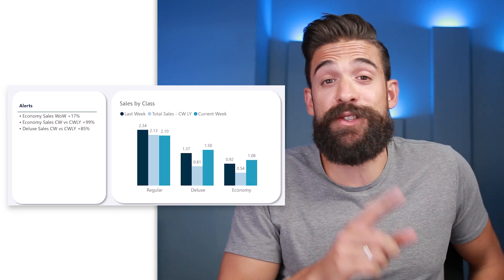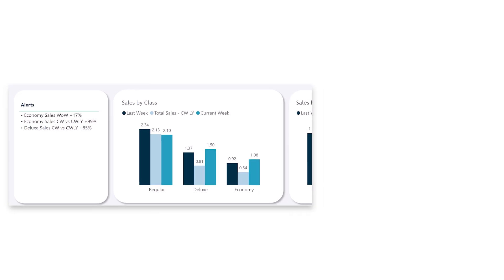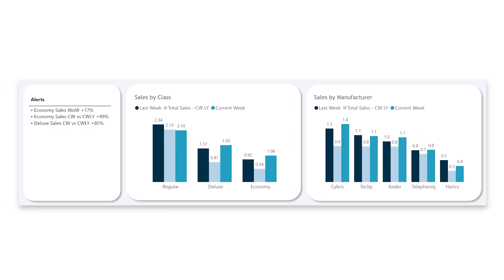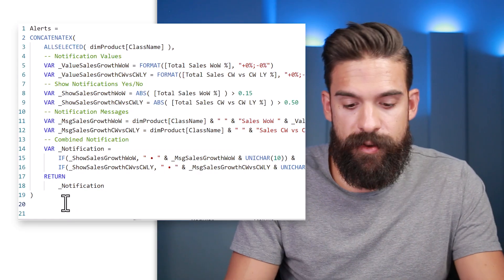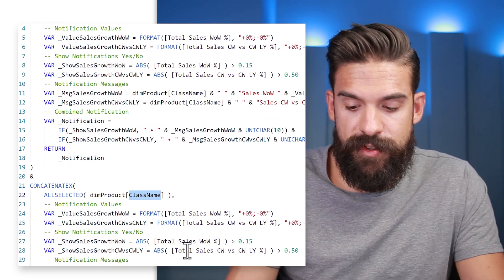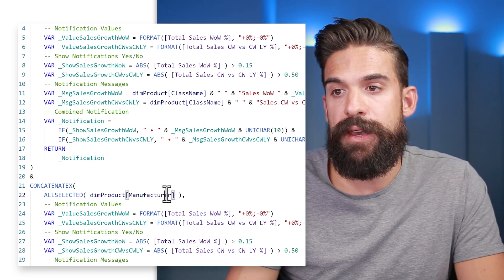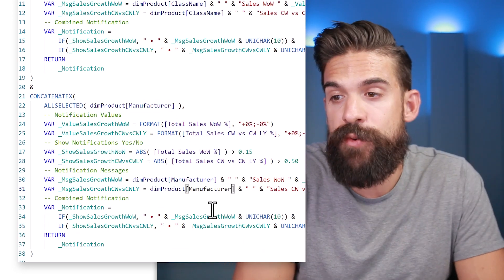Usually a report page has multiple charts, not just one. So let's add another chart — sales by manufacturer — showing the same measures but broken down by manufacturer. To update our alert measure to also check this chart, we go back and copy the whole measure content. Now instead of the class name we want the manufacturer. So we update the ALLSELECTED column reference from class name to manufacturer, because we want to perform the four steps for manufacturer instead of class name.